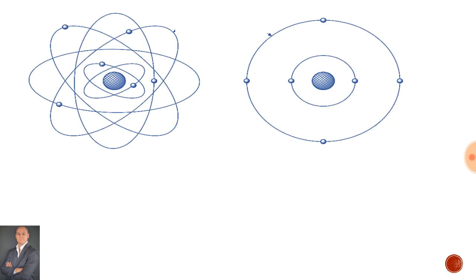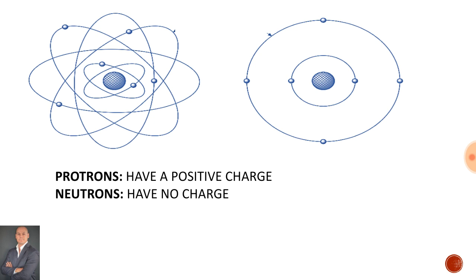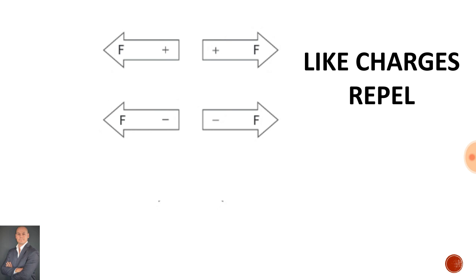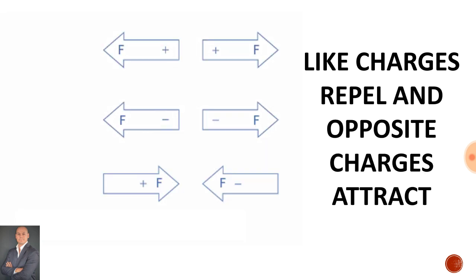In this diagram of an atom we find that protons have a positive charge, neutrons have no charge, electrons have a negative charge, and valence electrons are found in the outermost orbit of an atom. We find that like charges repel each other and opposite charges attract.